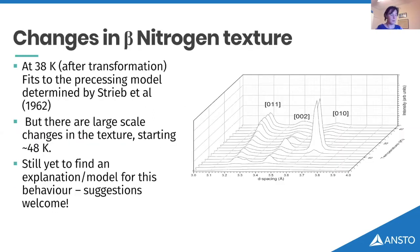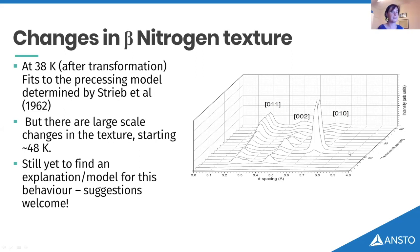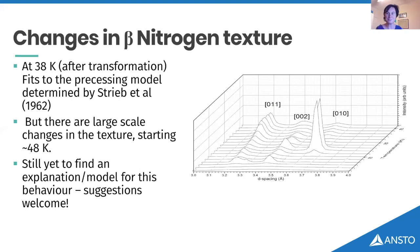The other interesting thing connoisseurs of diffraction data might notice is that as we warm up within the beta phase — the disordered phase — you get a lot of changes in intensities. What that's telling us is that the grains are changing: they're growing and changing their orientation. This becomes quite dramatic after about 55 Kelvin, which is actually the warmer part of Pluto's seasons. You can imagine that if you're starting to grow these big crystallites, that's going to have a big effect on Pluto's glaciology. That's something I'm still trying to work out, so any experts on texture or grain boundary growth, I'd be very happy to hear from you.